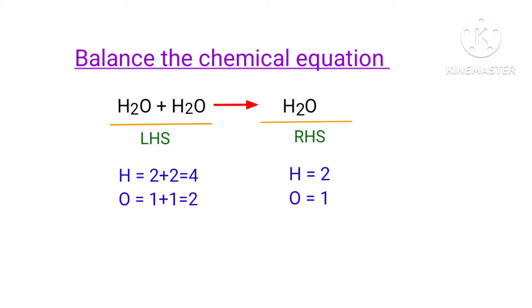If you observe this, the number of atoms on the left hand side are double the number of atoms on the right hand side. So to balance this equation, we need to put a coefficient of 2 in front of the right hand side.